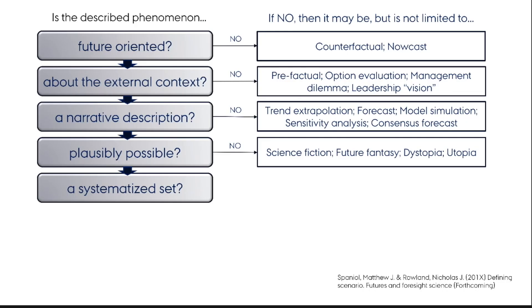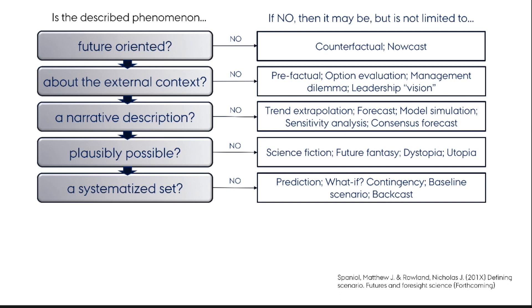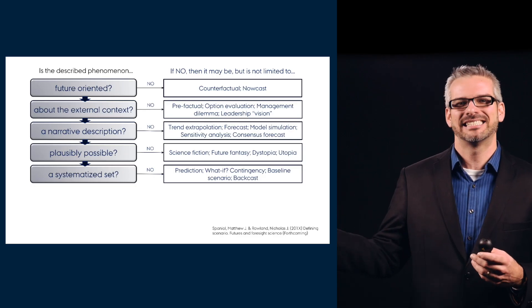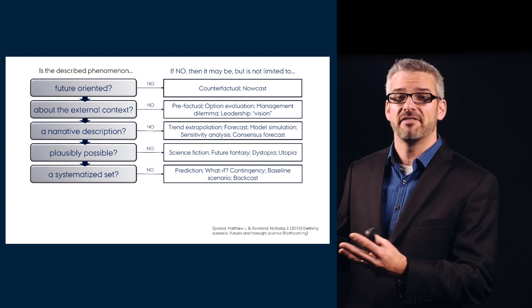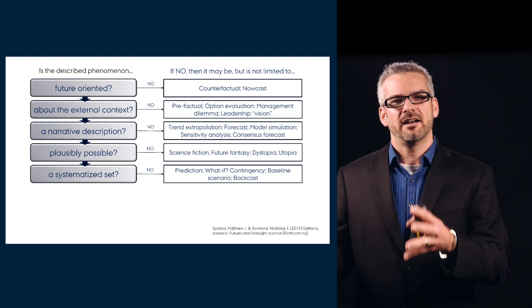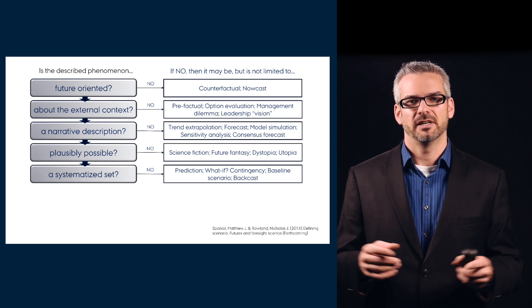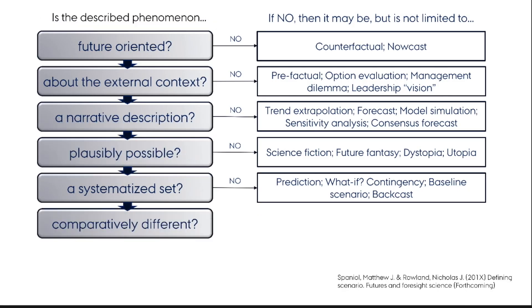The fifth question: is the scenario inside a systemized set? This essentially asks whether there is more than one scenario. A scenario is often considered as a baseline, a prediction, a what-if, or a contingency plan — all more or less singular futures used for analysis, but not a set of scenarios used to plan for the future. The sixth and final question: are they comparatively different? Scenarios must be different from one another to help us plan more holistically across a range of futures, broadening our scope. Other techniques build scenarios using cluster or island heat maps via morphological boxes, but if scenarios occupy the same space, they're not different enough to justify planning with them. Getting all the way down through the flowchart to the end is what scholars in Foresight and Future Studies would consider to qualify as a scenario.